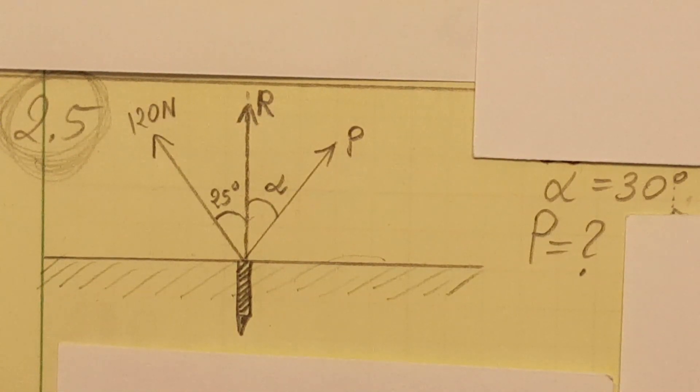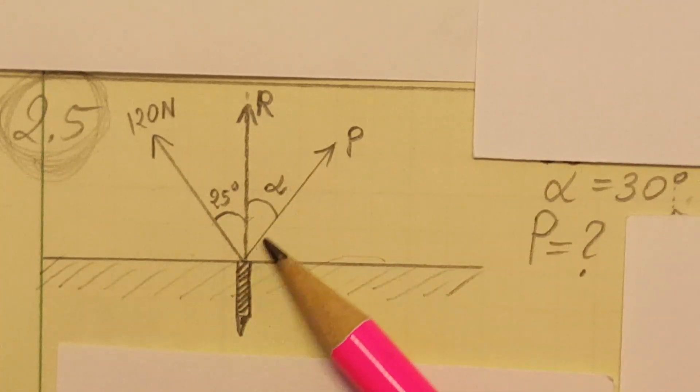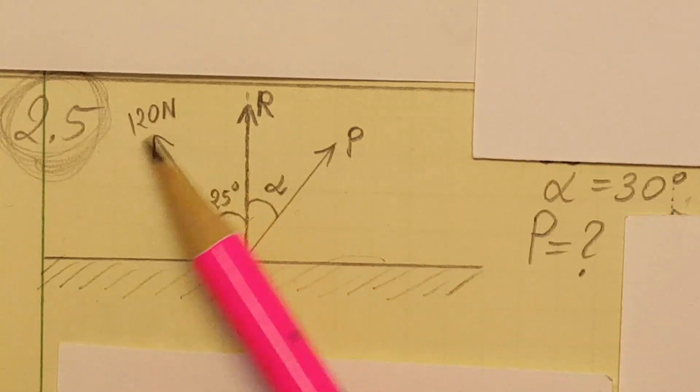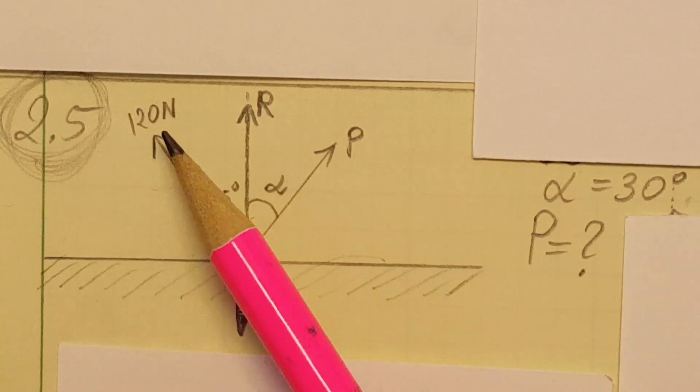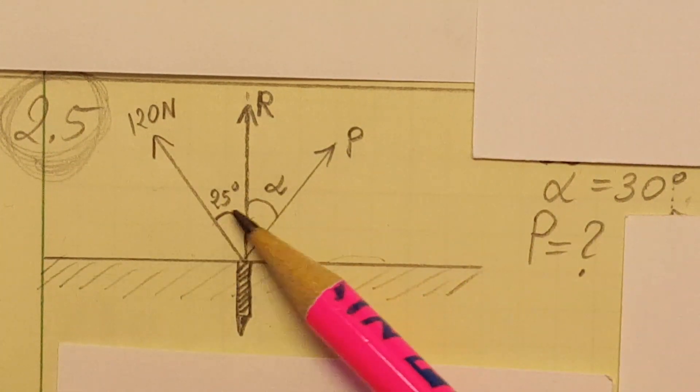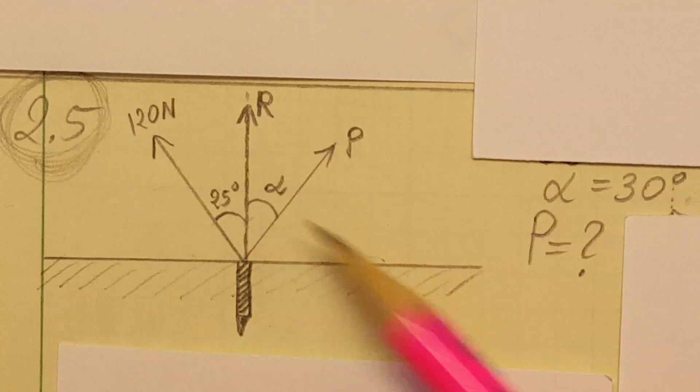Okay, in this physics problem we're going to work with vectors. Here we have a stake in the ground that is being pulled out by means of two ropes. You can see them right here - one of them is P, the other one has a magnitude of 120 newtons. We know that this angle is 25 degrees and this one we will adjust to 30 degrees.